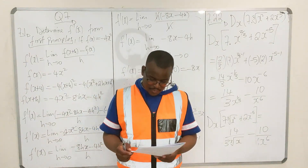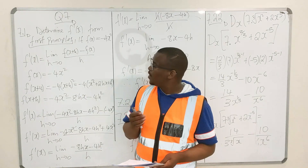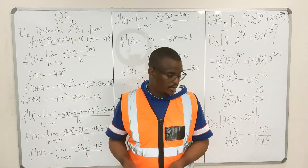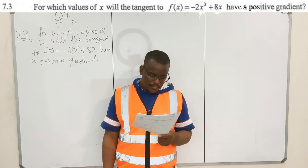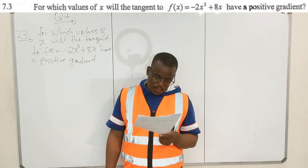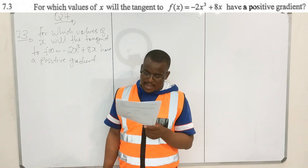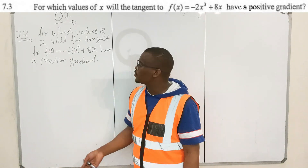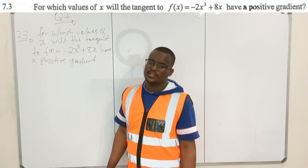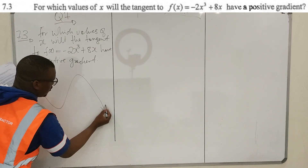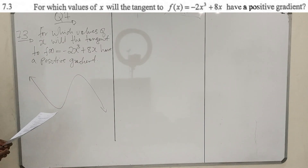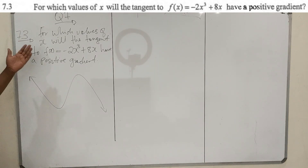We move on to 7.3. The question asks: for which values of x will the tangent to f have a positive gradient? Our function is a cubic with a negative leading coefficient, so it has a shape something like an inverted S-curve.